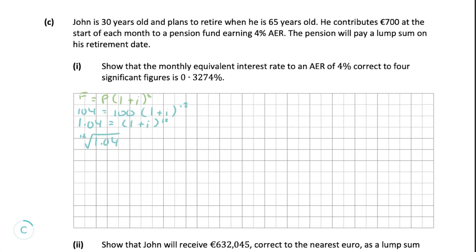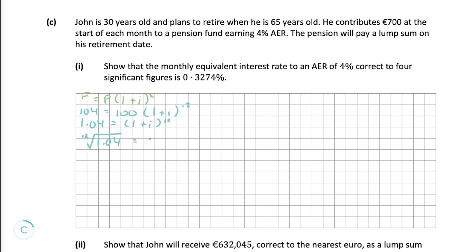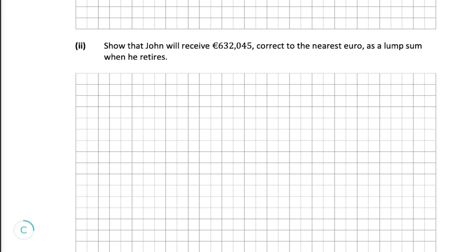Using our calculator, the 12th root of 1.04 gives us 1.00327374. So 1 + i = 1.00327374, meaning i = 0.003274 to four significant figures, which is the same as 0.3274%.